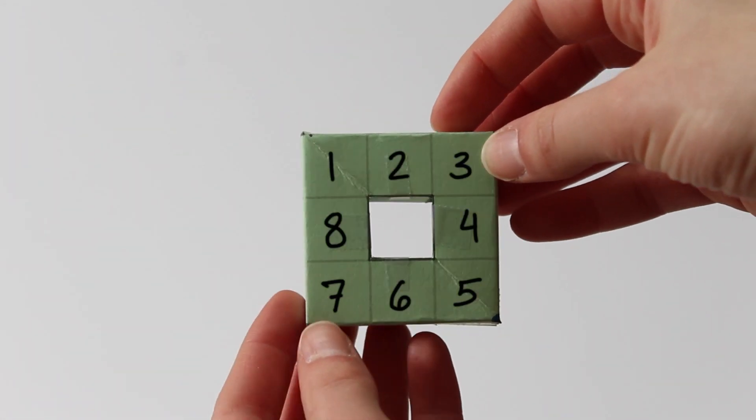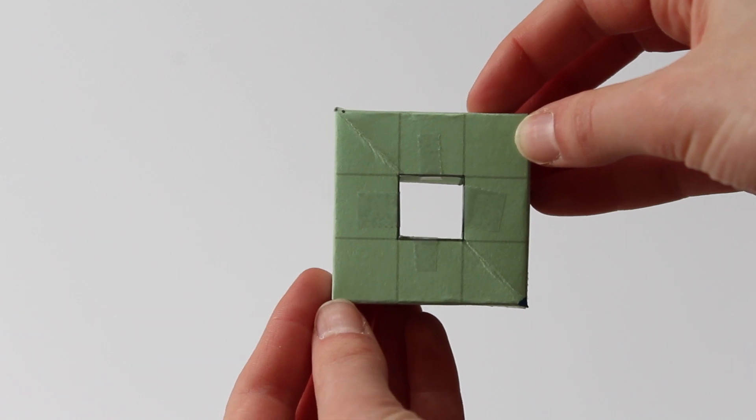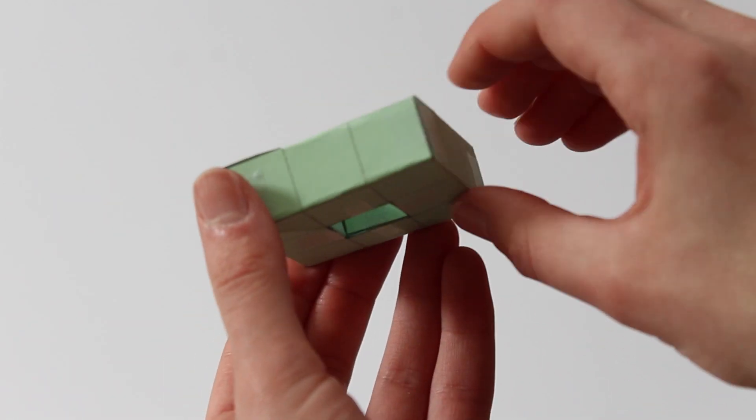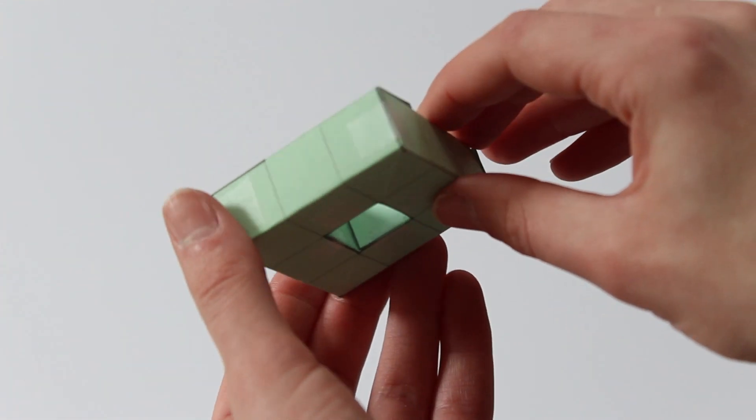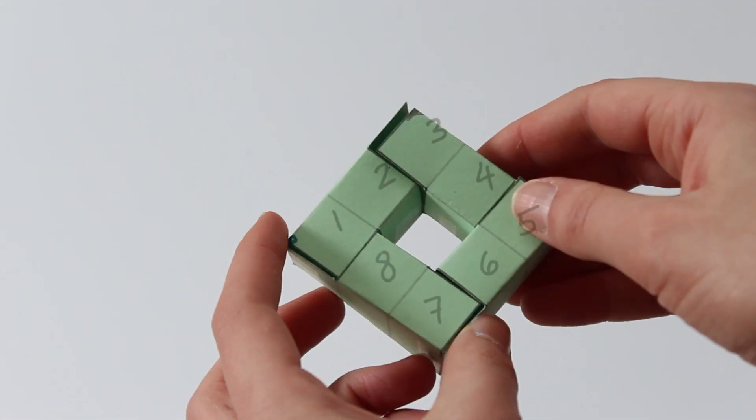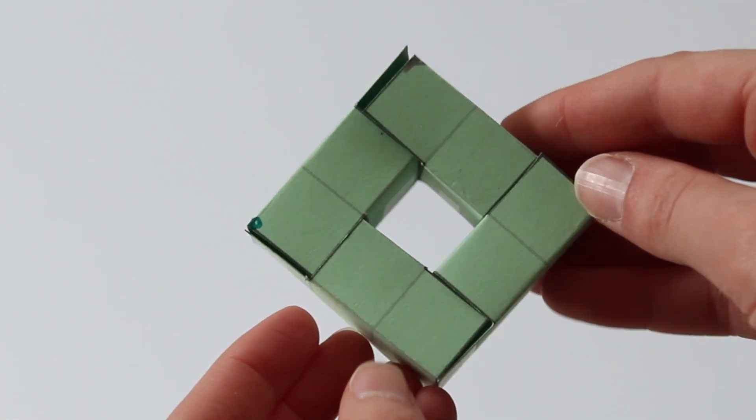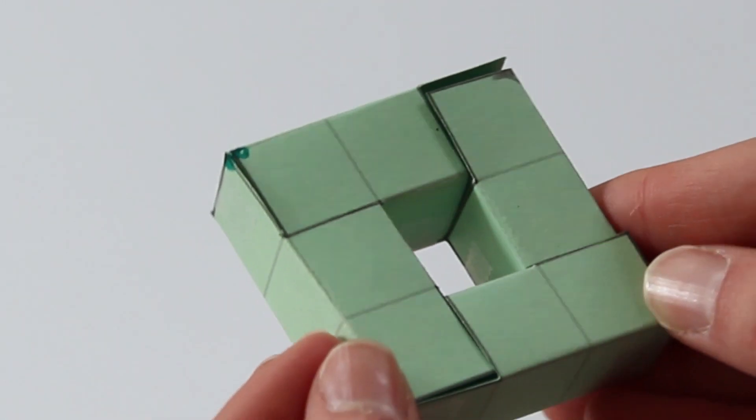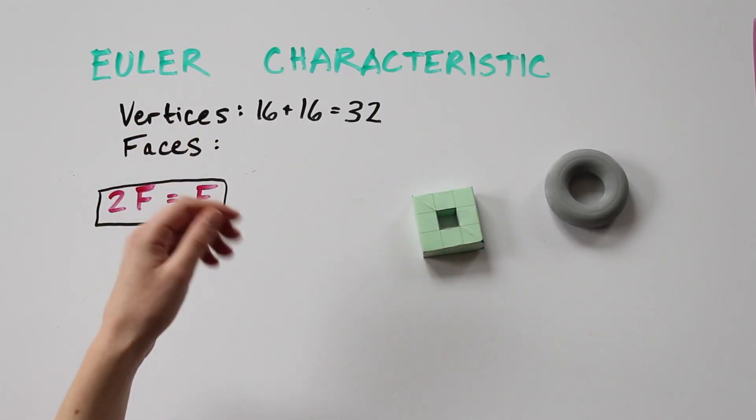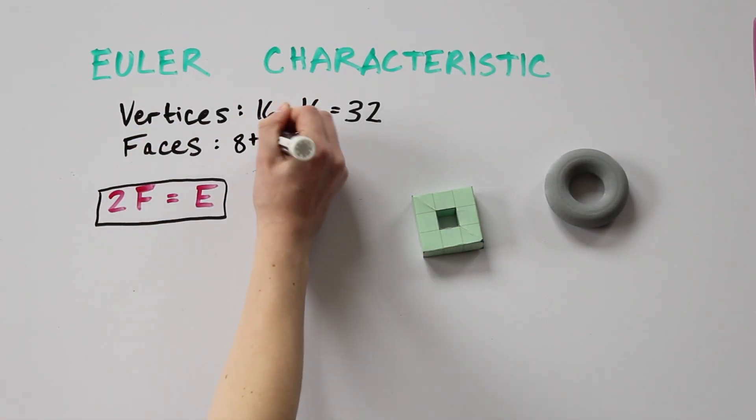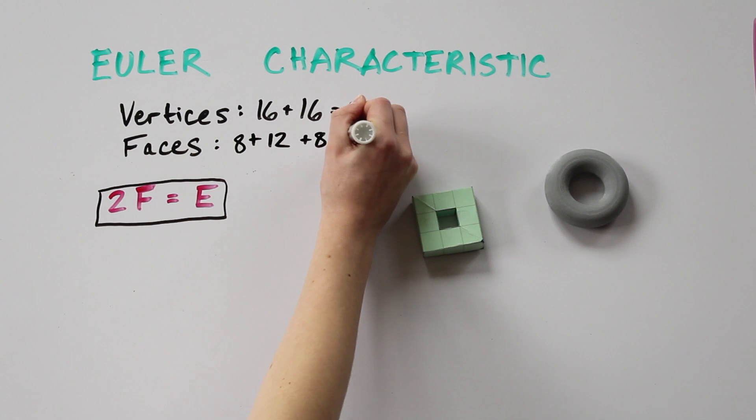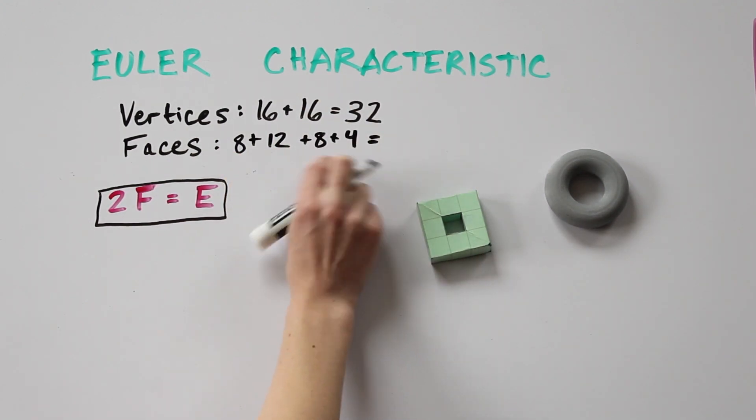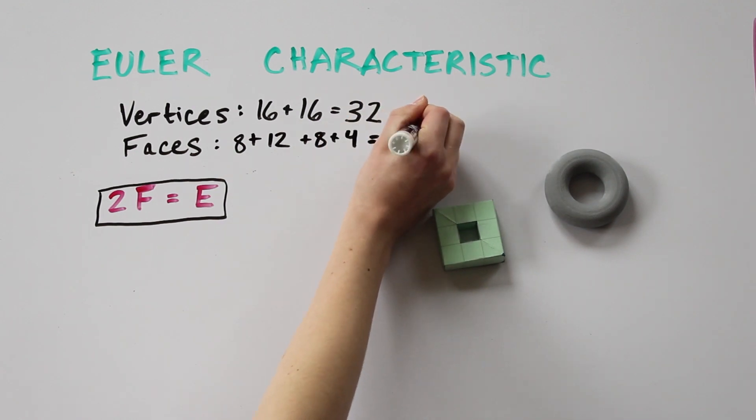There are 8 faces on top, 12 around the outside, 8 on bottom, and 4 on the inside. 8 plus 12 is 20, plus 8 is 28, plus 4 is 32. 32 total faces.